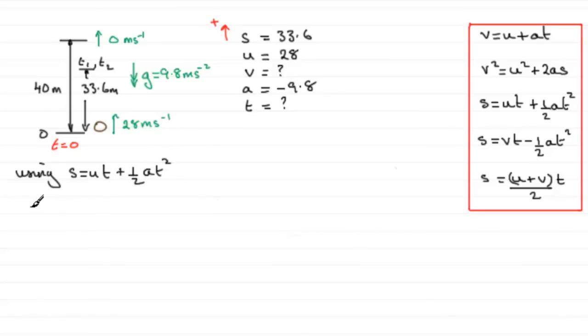So if we use that equation, using S equals UT plus a half AT squared, then what we've got is that S the displacement is 33.6 equals U which is 28 multiplied by T plus a half times the acceleration, which is minus 9.8 times T squared. So if we clean this up, this is going to cancel. We can say 2 into the minus 9.8 goes minus 4.9 times.